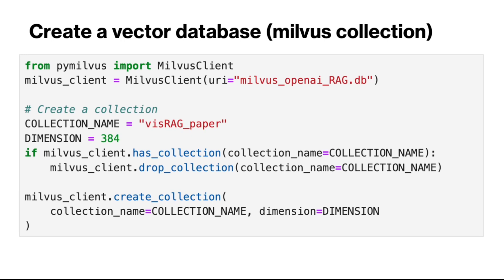The next step is to store the chunks and their associated embeddings for lookup. As we said earlier, we use the Milvus vector database for this part. So we import a Milvus client and create a database locally, then we create a collection named VisRAGPaper. If a collection with this name already exists in our database, we can drop it and recreate the collection.